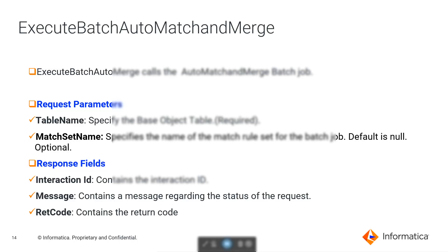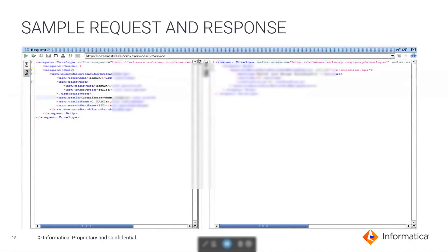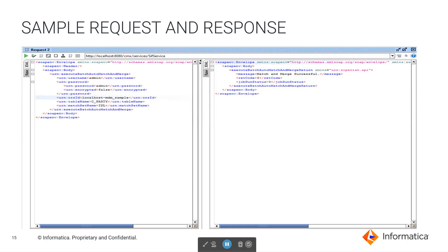Coming to ExecuteBatchAutoMergeAndMatch API, this API calls the automerge batch job. From the request parameters, we can see that we need to provide table name, which is the BaseObject table name and which is a required field. We also have match-set name, which specifies the name of the match rule set for the batch job — by default it will take null value and this is an optional field. From the response fields, we will get interaction ID, message, and return code. In the sample request, we provide username, password, ORSID, table name which is the BaseObject table name upon which you want to execute the automerge-match batch job, and also the match-set name. Here it's null. From the response, you can see that match and merge is successful — job has been done successfully.